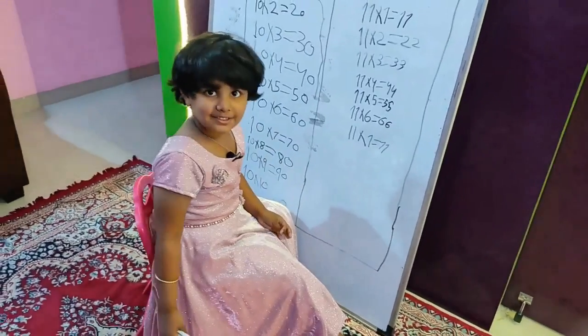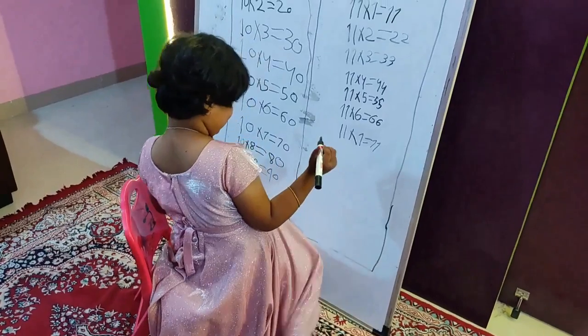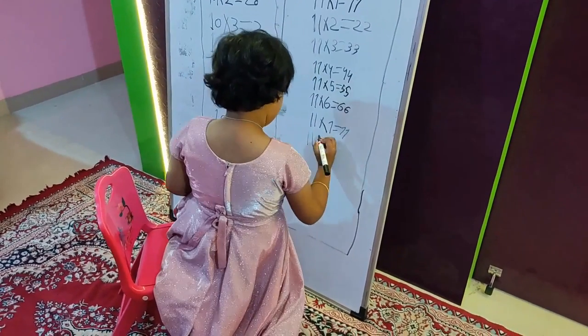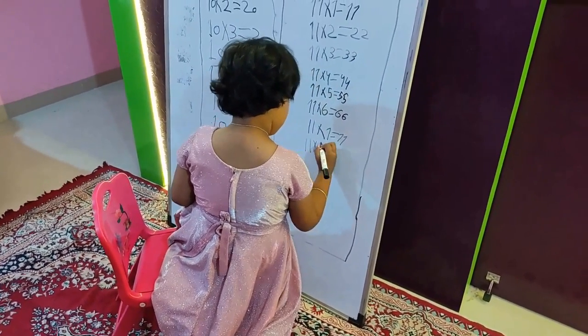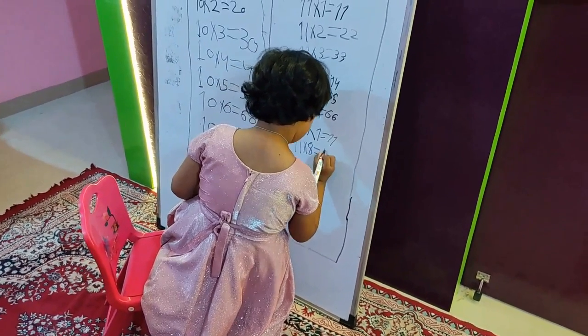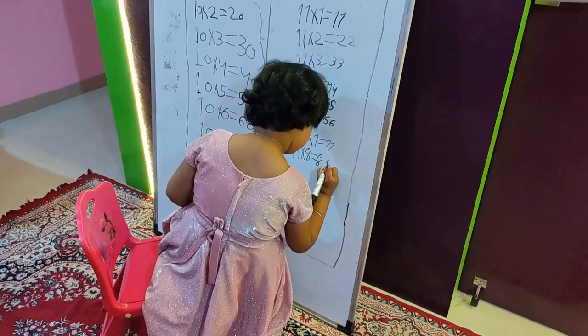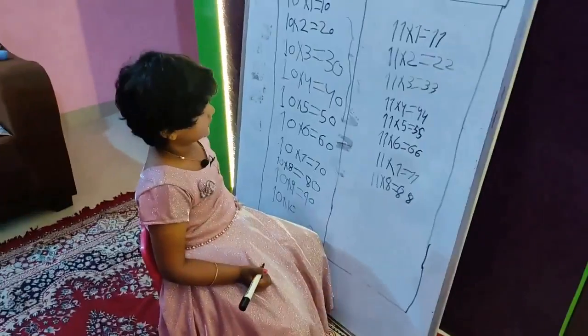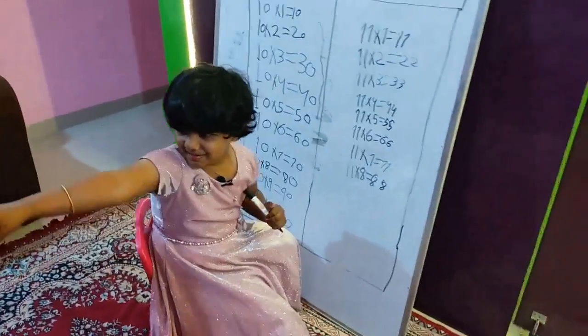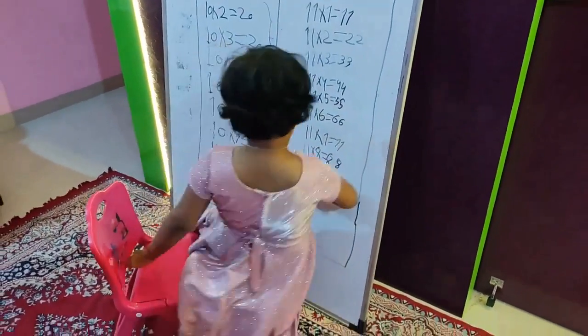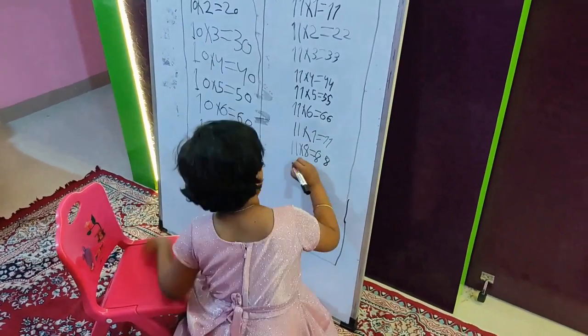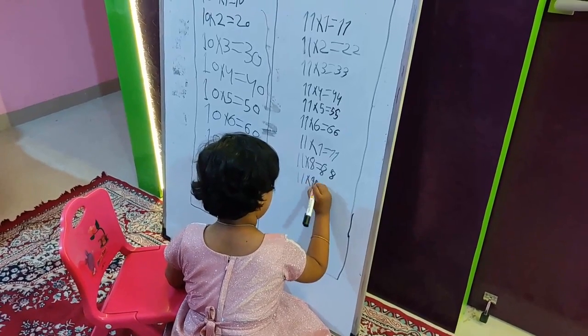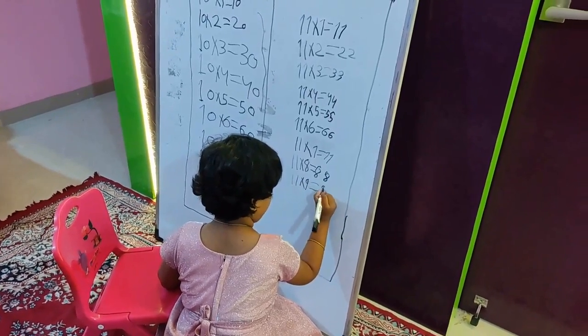This part is not done. Eleven multiply eight equals eighty-eight. Very fast this man do. I done it do. Eleven multiply nine equals ninety, ninety-nine.